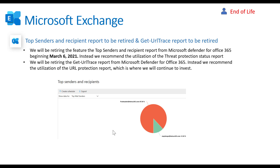Two reports in the Security and Compliance Center are being retired on March 6th: the Top Senders and Recipients report and the Get URL Trace report. Microsoft wants you to replace these with the Threat Protection Status report and the URL Protection Report, which is part of Microsoft Defender for Office 365 — previously known as Advanced Threat Protection (ATP). The URL Protection replacement goes live in early March, roughly the same timeframe.